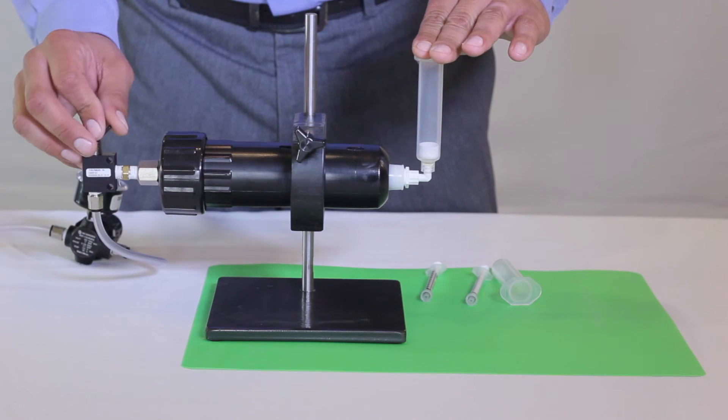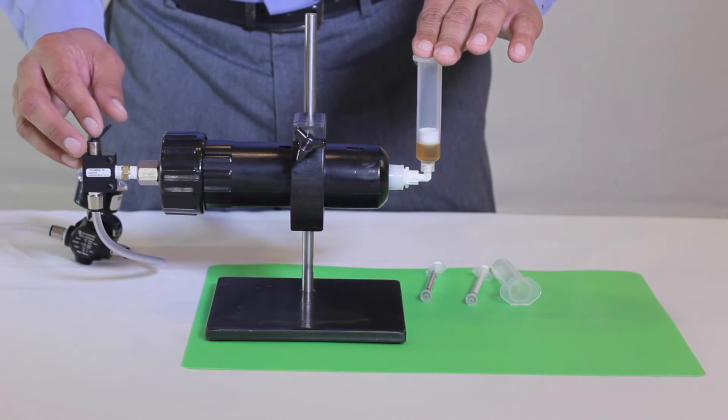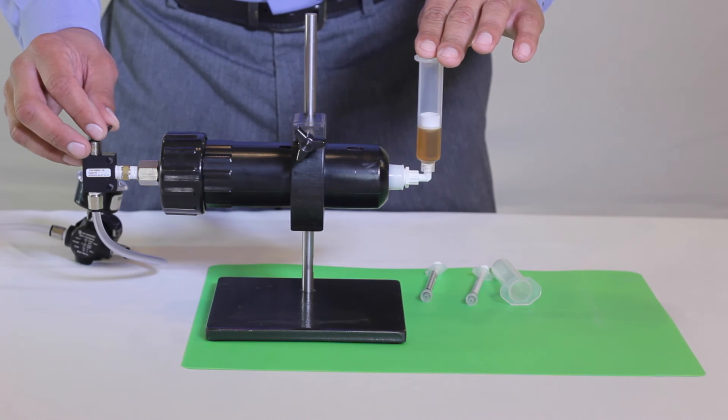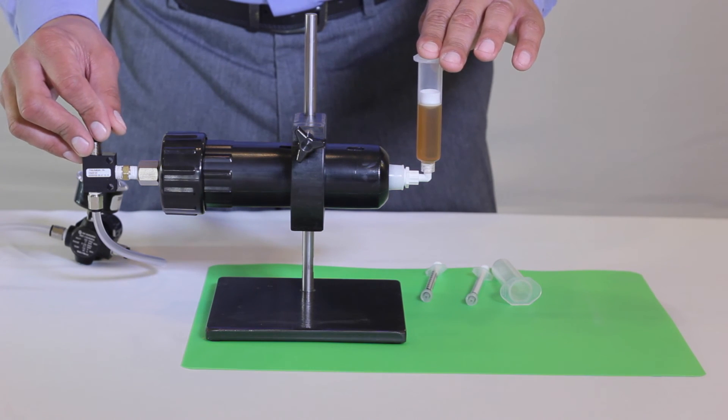Attach the desired syringe for filling to the lure lock fitting. When the syringe is securely attached, place the toggle switch into the on position.